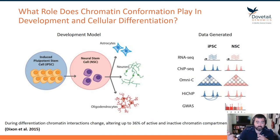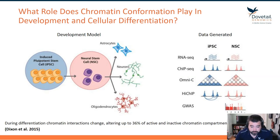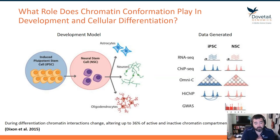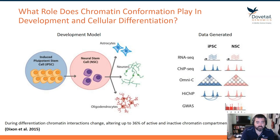Those NSCs could then be further developed into astrocytes, neurons, or oligodendrocytes. We're going to focus in on the difference between the iPSC — those pluripotent stem cells — and the neuronal stem cells, just the kickoff between differentiation into that neuronal cell type.